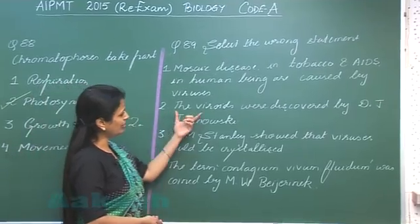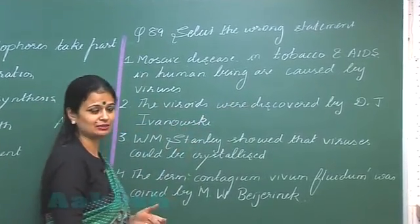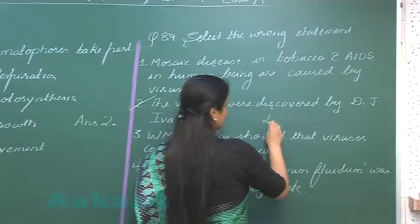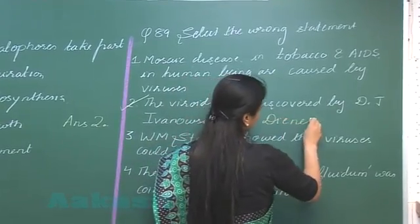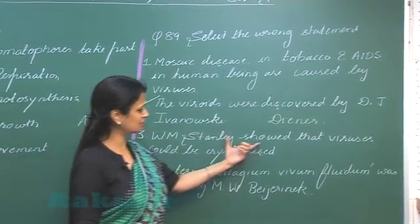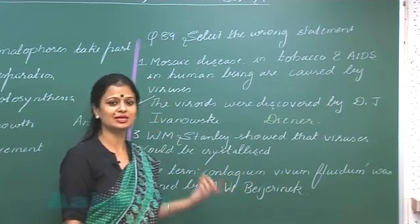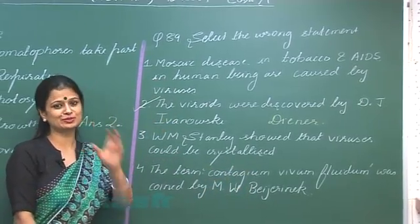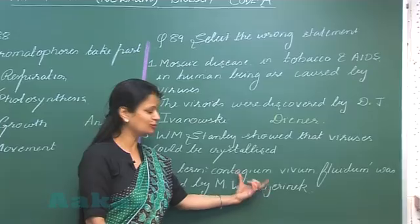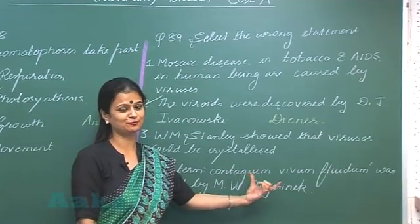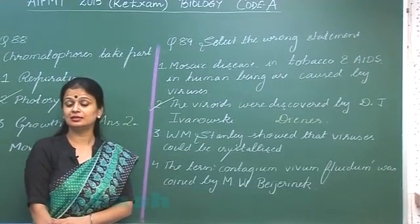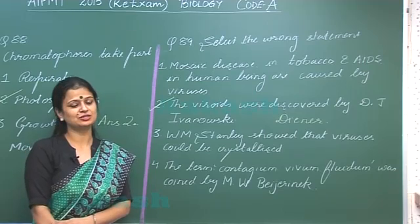The second option states that viroids were discovered by Ivanovski — this is wrong. Viroids were actually discovered by Diener. Stanley first crystallized viruses; specifically, he first crystallized tobacco mosaic virus. Beijerinck gave the term 'contagium vivum fluidum' for viruses, which means living infectious fluid.